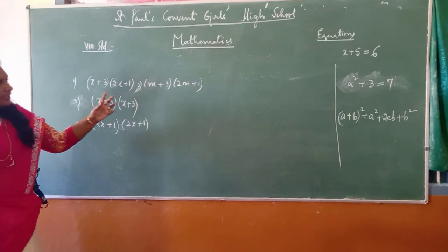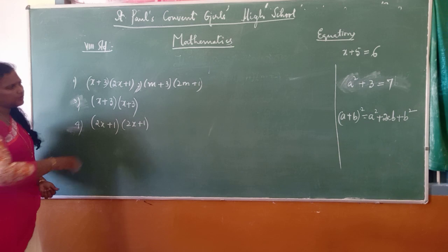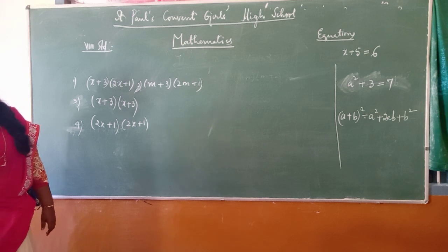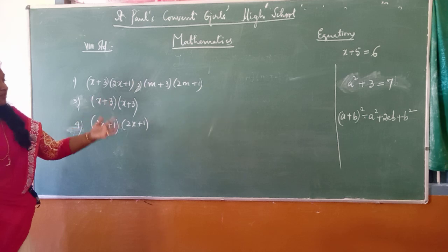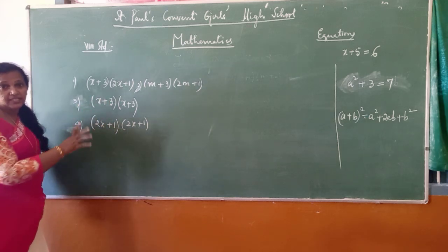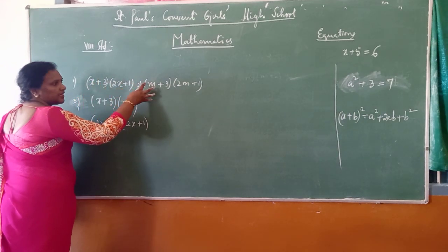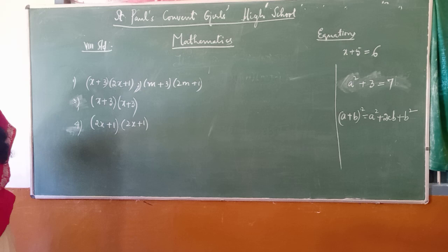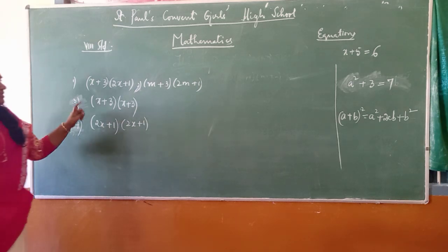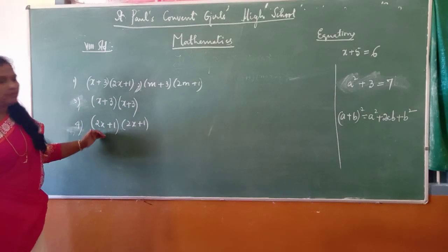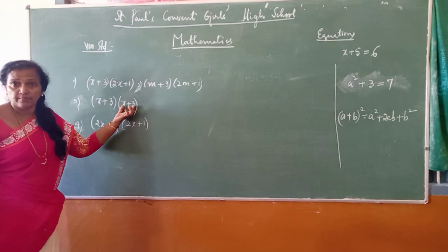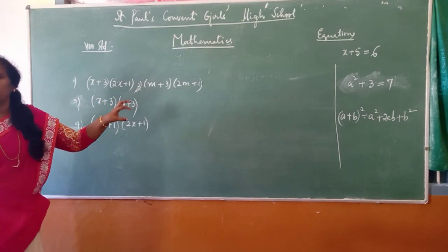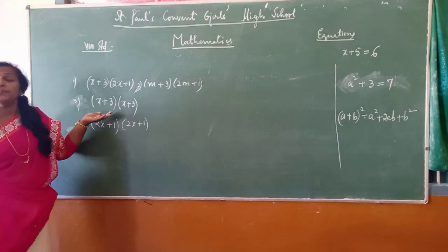If you observe carefully, among the given four problems there is a difference. What difference can you make out when you see the problems? Can anybody tell me the difference among the problems given to find the product? You can observe that the first and second are one type, and the third and fourth are entirely different. In the third and fourth problem, the two terms inside the bracket are the same.